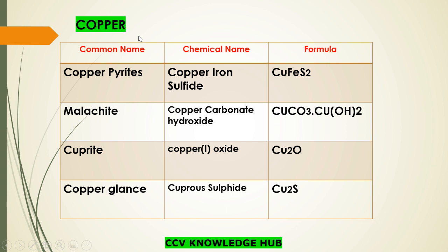Next, copper-related ores. Copper pyrites — chemical name is copper iron sulfide, formula is CuFeS₂. The next one is malachite — chemical name is copper carbonate hydroxide, formula is CuCO₃·Cu(OH)₂. It is a hydroxide and carbonate.